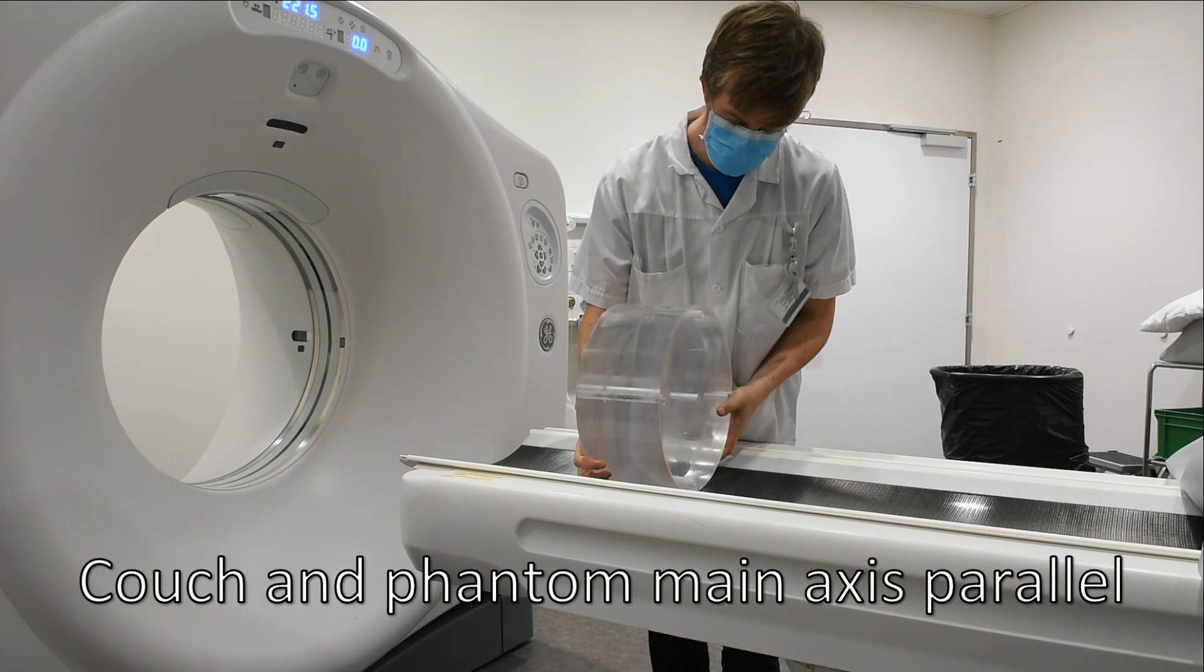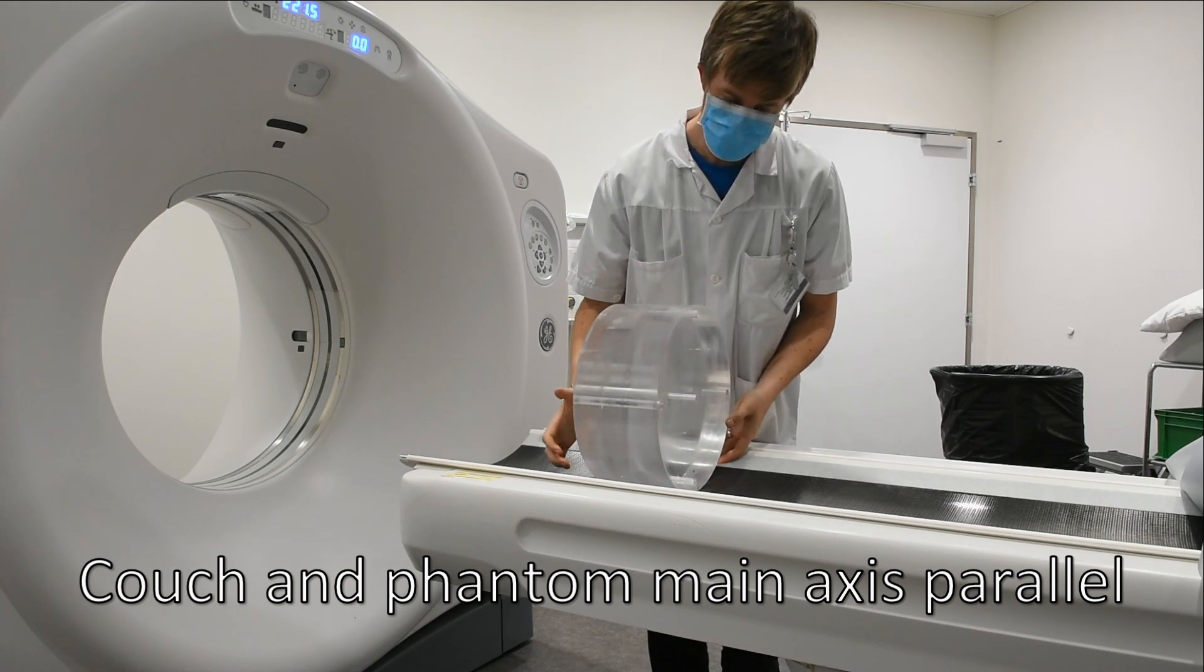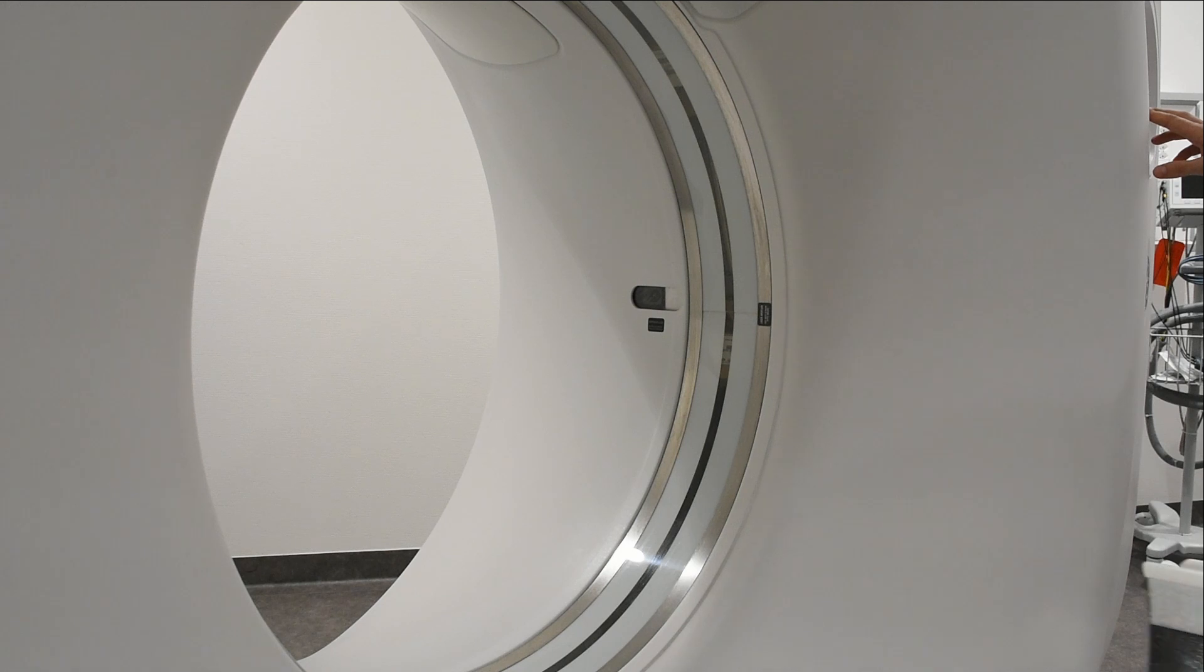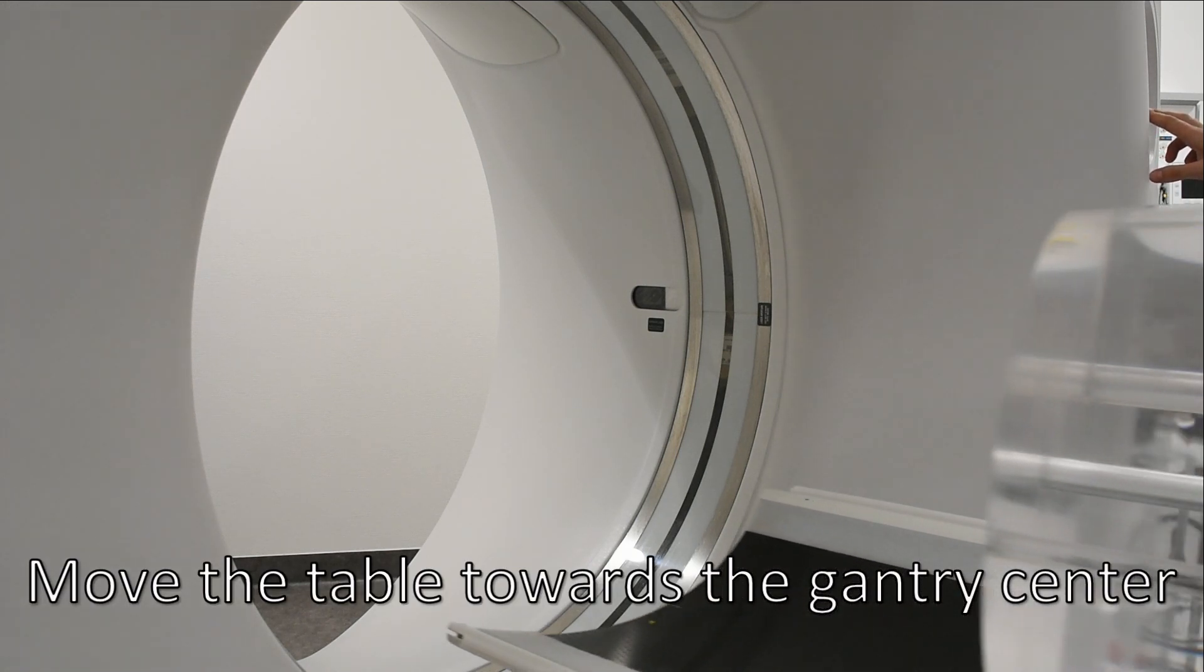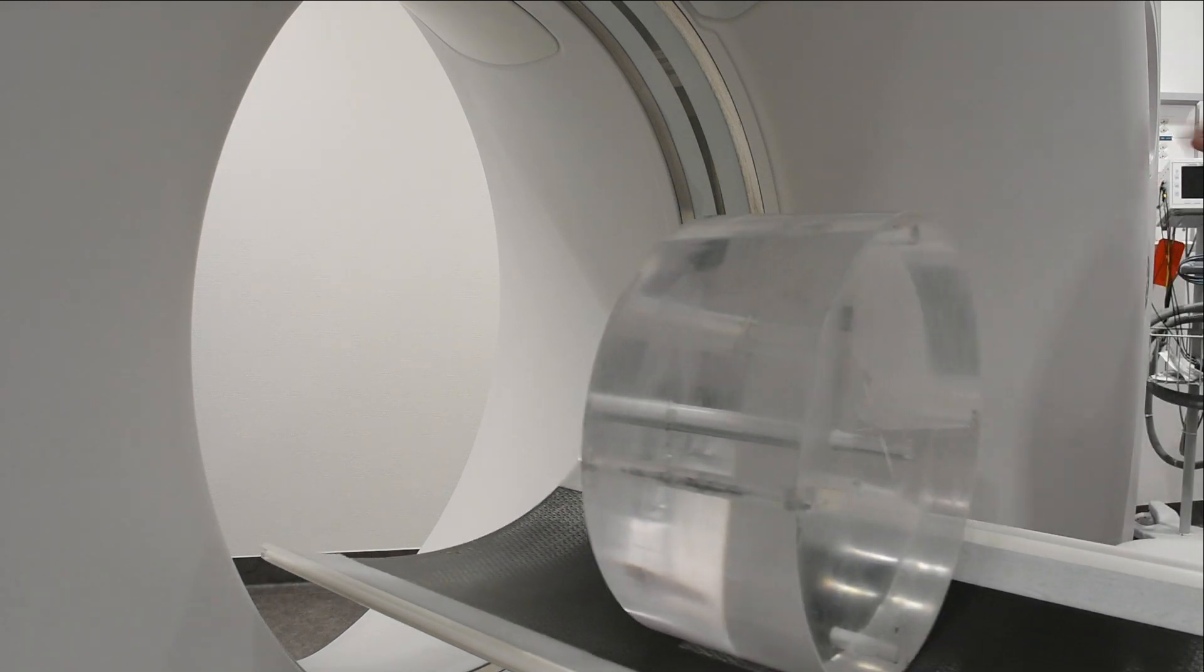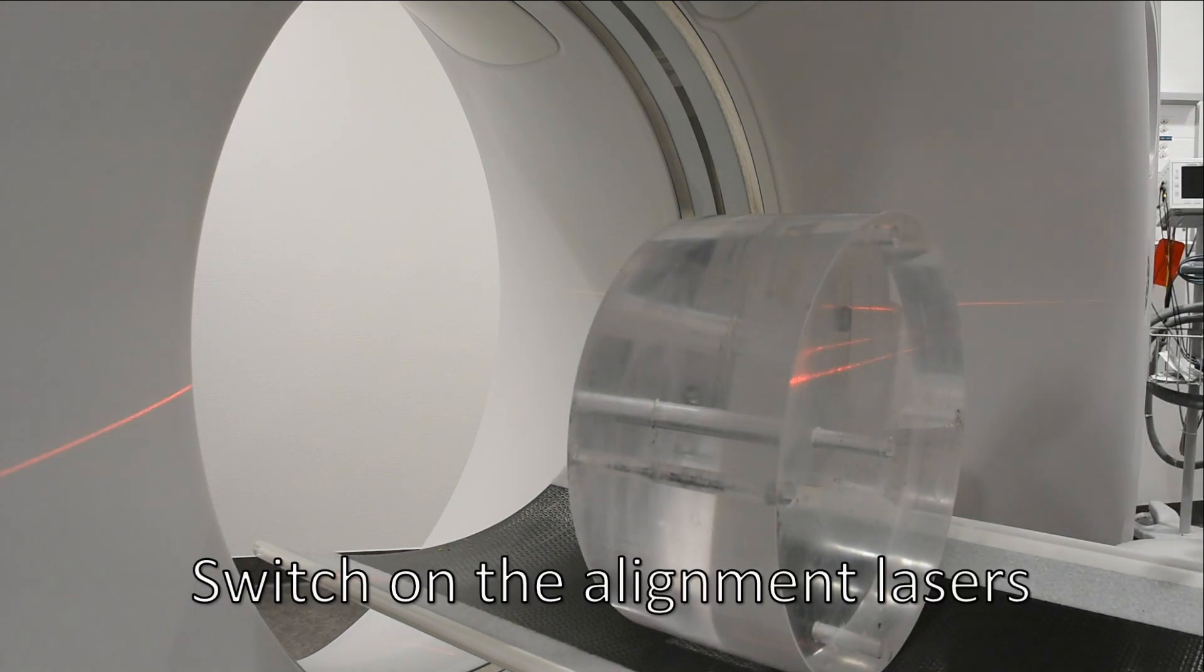Make sure the couch and phantom main axis are parallel. Move the table towards the gantry center. Switch on the alignment lasers.